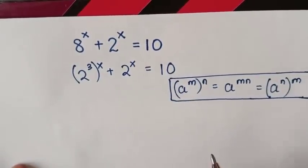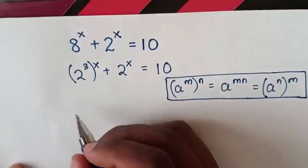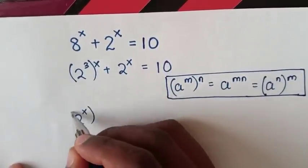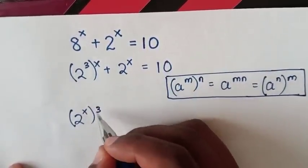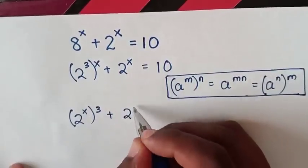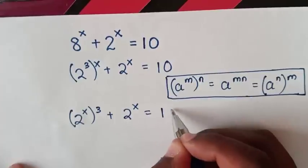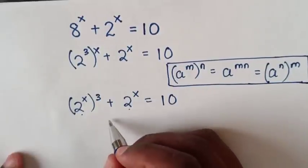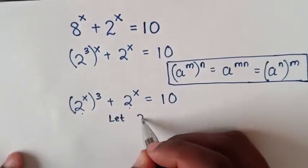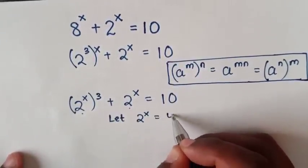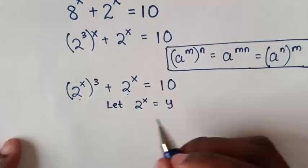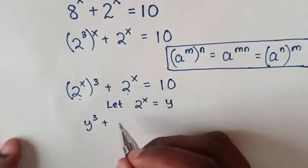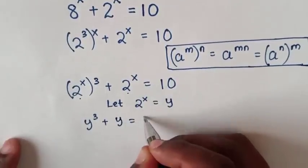Then in our equation, it will be 2 power x, inside the bracket power 3, plus 2 power x is equal to 10. Then 2 power x is common, so we let 2 power x equal to y. We substitute y, so it will be y power 3 plus y is equal to 10.